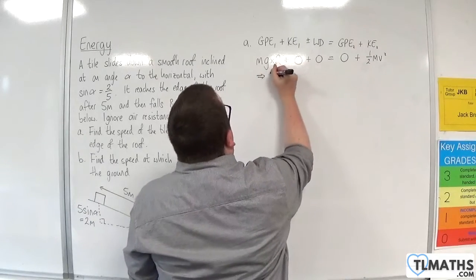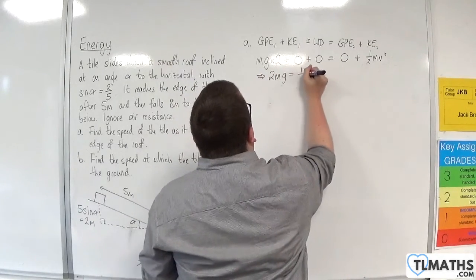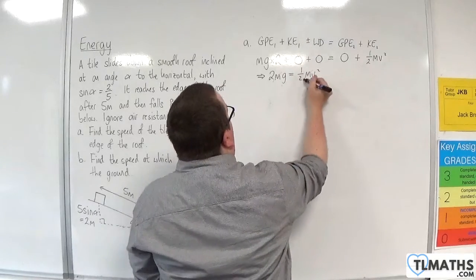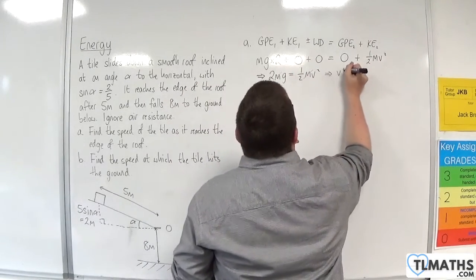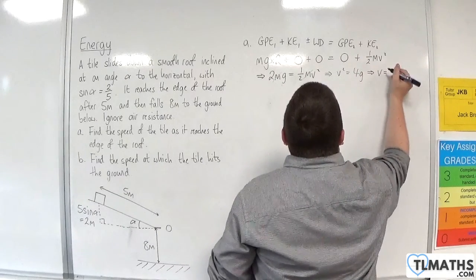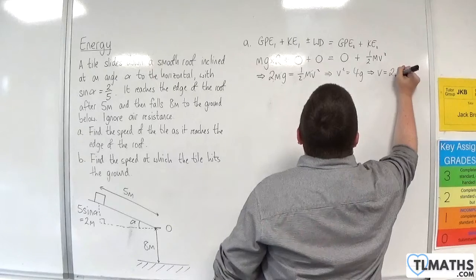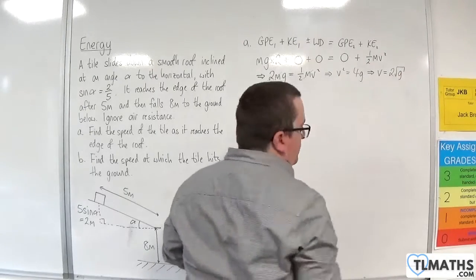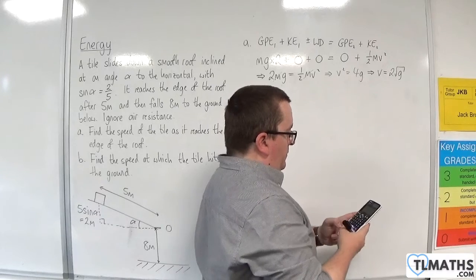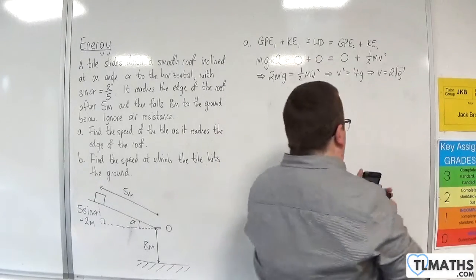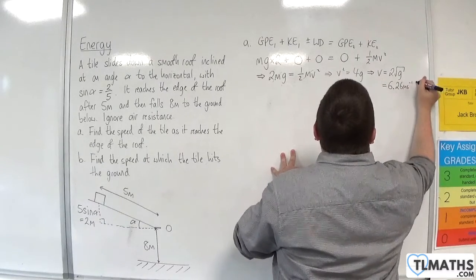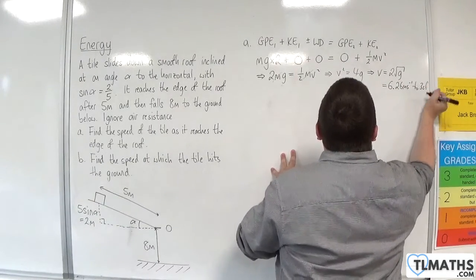So we have 2mg is equal to one-half mv squared. So you can see that the m's cancel. So v squared is 4g. So that means that v is the square root of 4g, which is 2 root g. So if g was 9.8, we would get 6.26 metres per second to 3 significant figures.